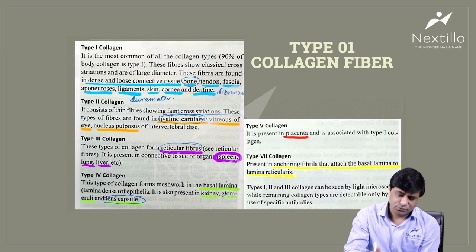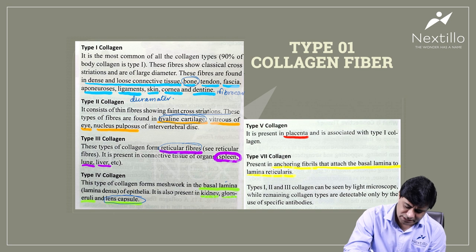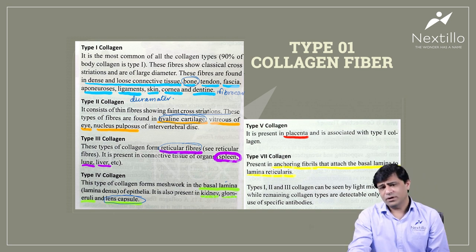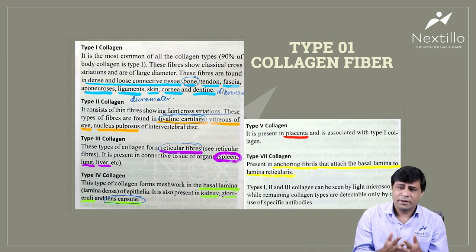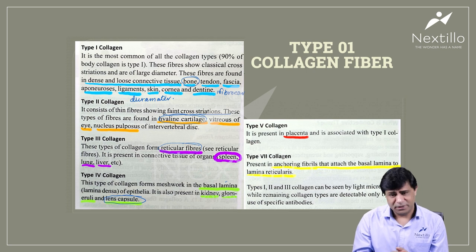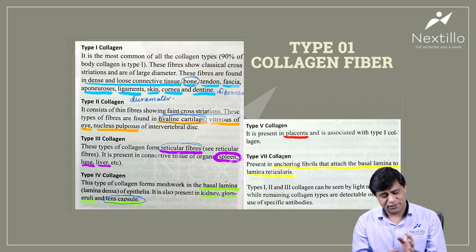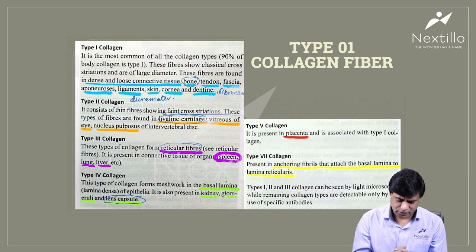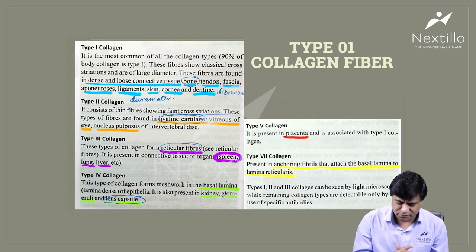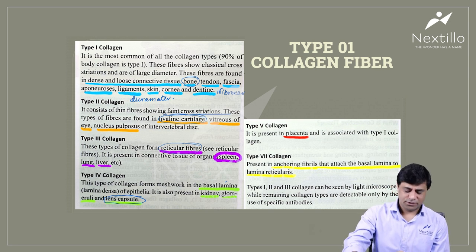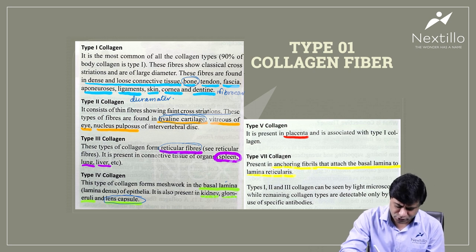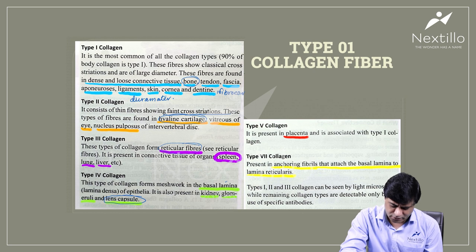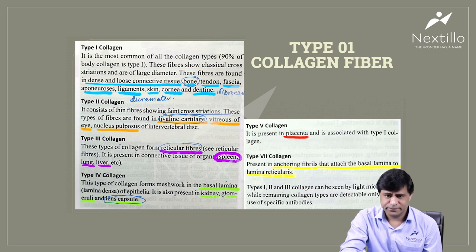Type 5 collagen — remember 5 with placenta — is present in the placenta and is associated with type 1 collagen. If asked about placenta, your first answer should be type 5 collagen. Type 7 is present in the anchoring fibrils that attach the basal lamina down to the lamina reticularis. Remember that types 1, 2, and 3 collagen can be seen with light microscopy, but the rest require special microscopes to identify.